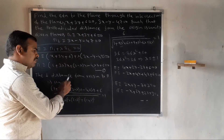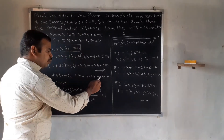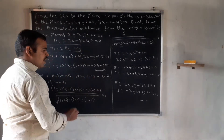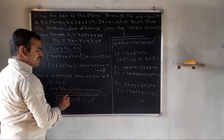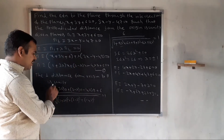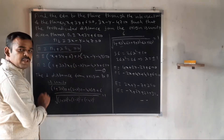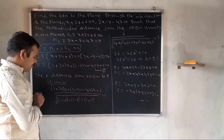The perpendicular distance from the origin to the plane equals unity, that is, equal to 1.